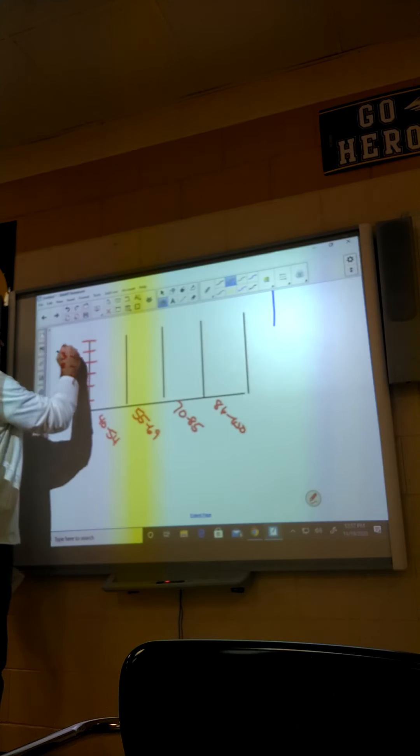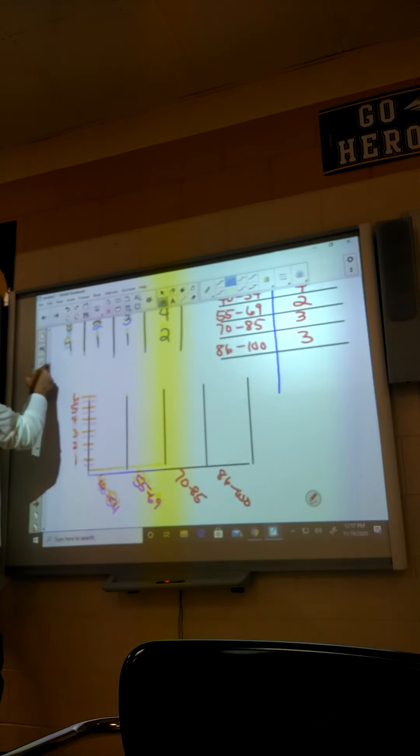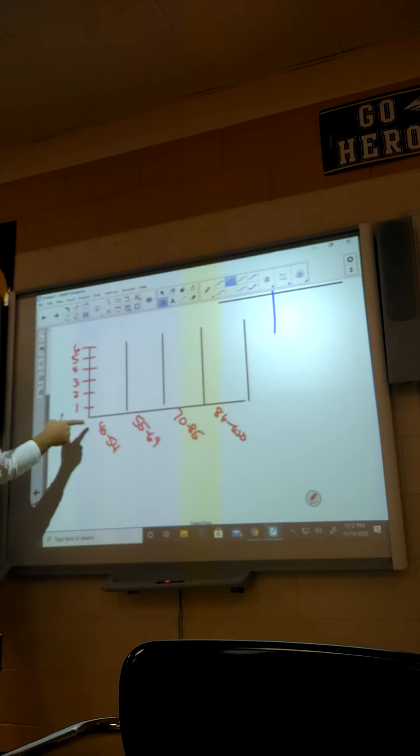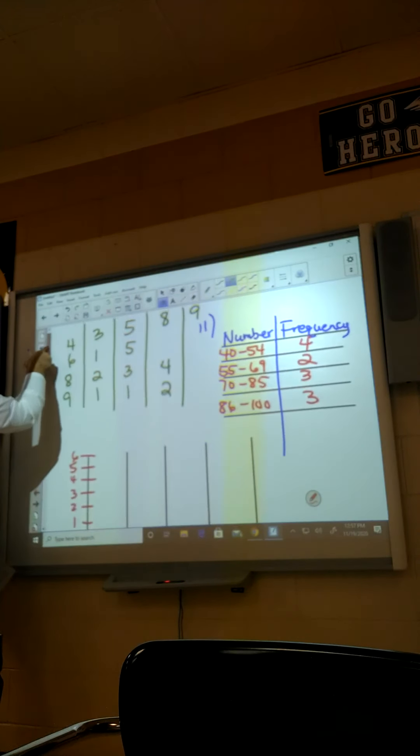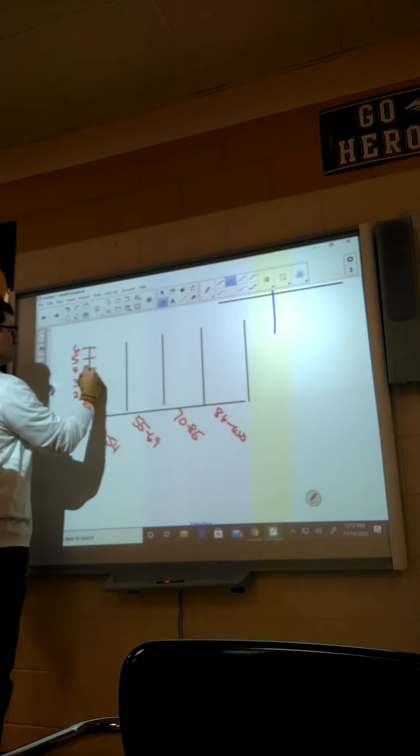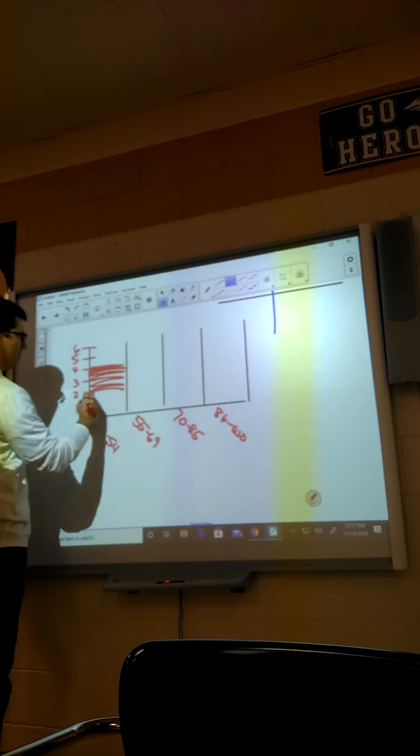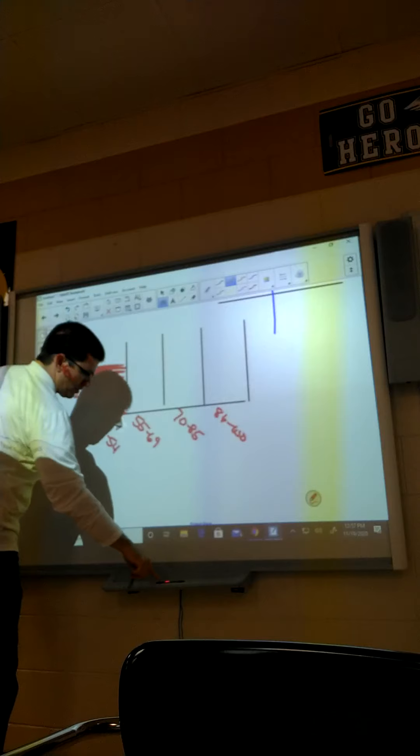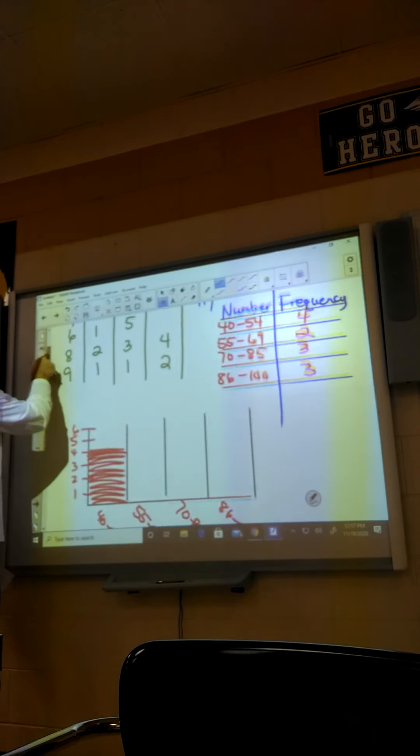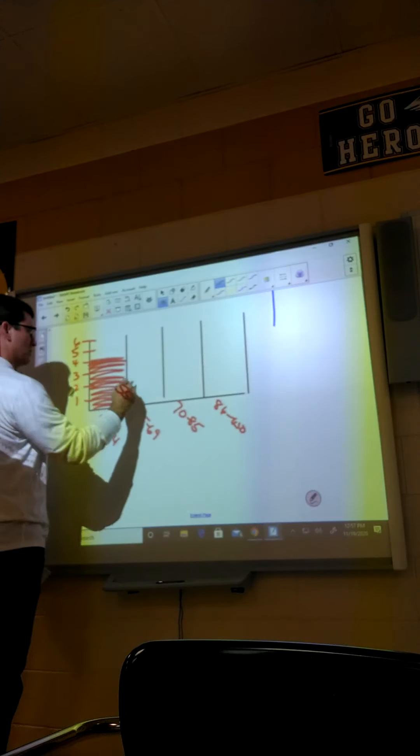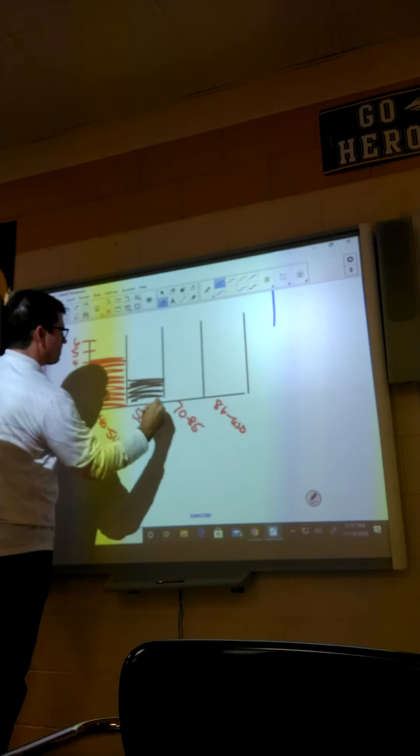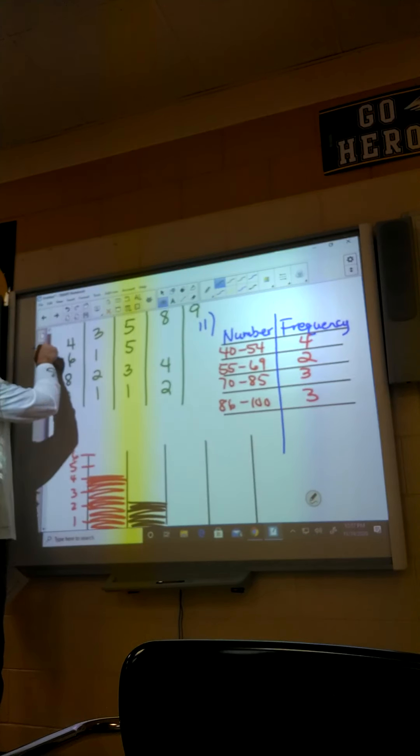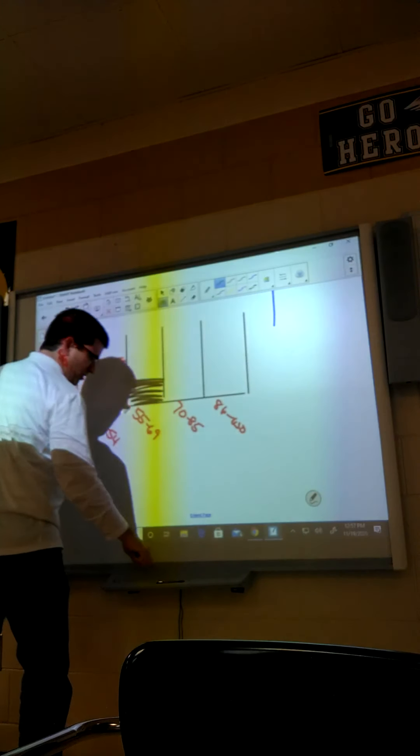All right, so how many times does it occur that the number is written down 40 through 54? We got four of those, so you go here and you color it in. All right, how many times 55 through 69? Two. All right, how many times 70 through 85? Three. And three.